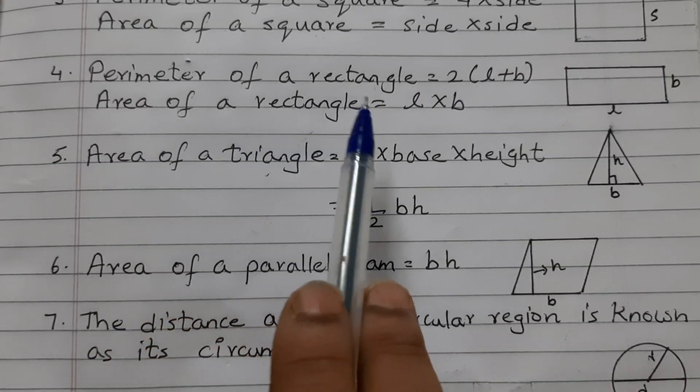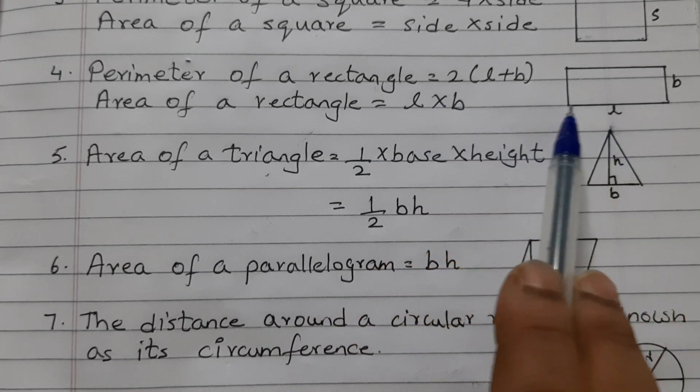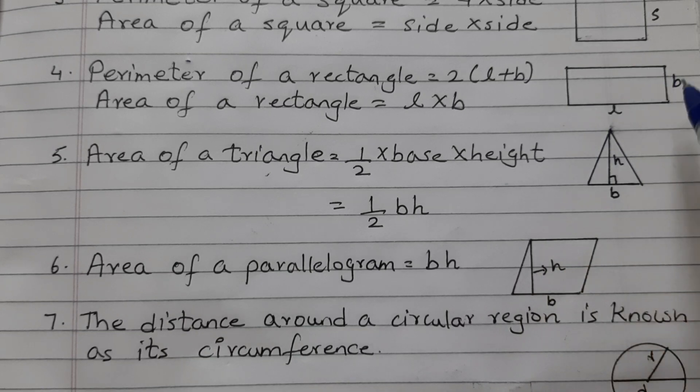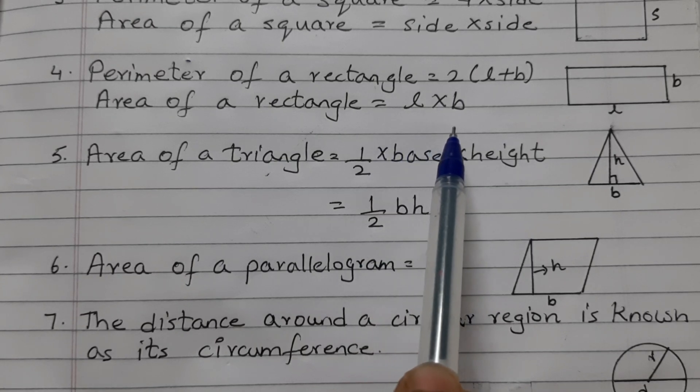Perimeter of a rectangle is equal to 2 into L plus B. L is the length of the rectangle and B is the breadth of the rectangle. Area of a rectangle is equal to L into B, that is length times breadth.